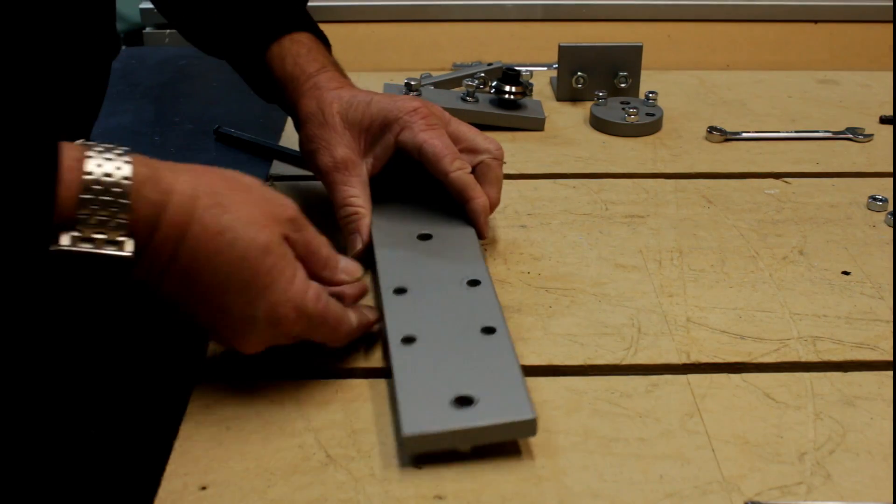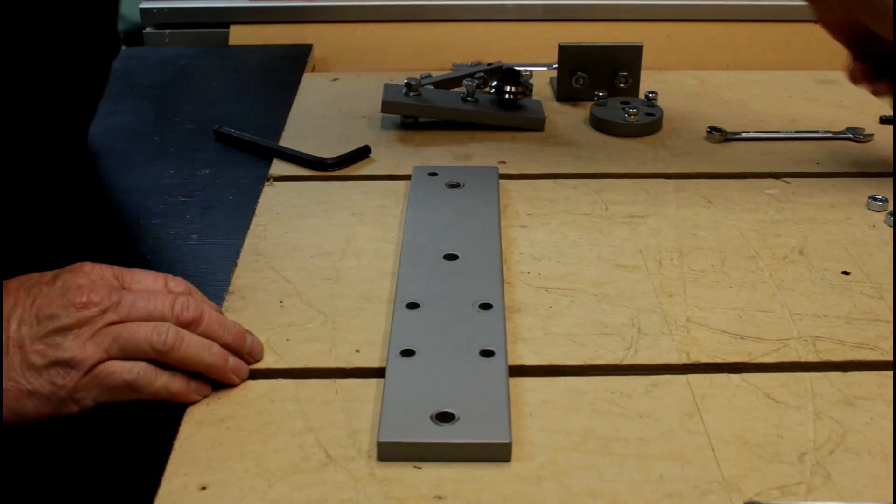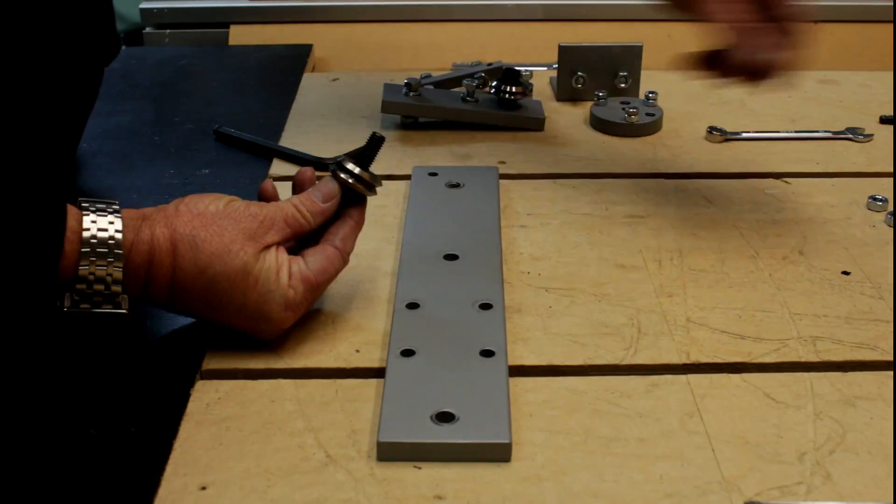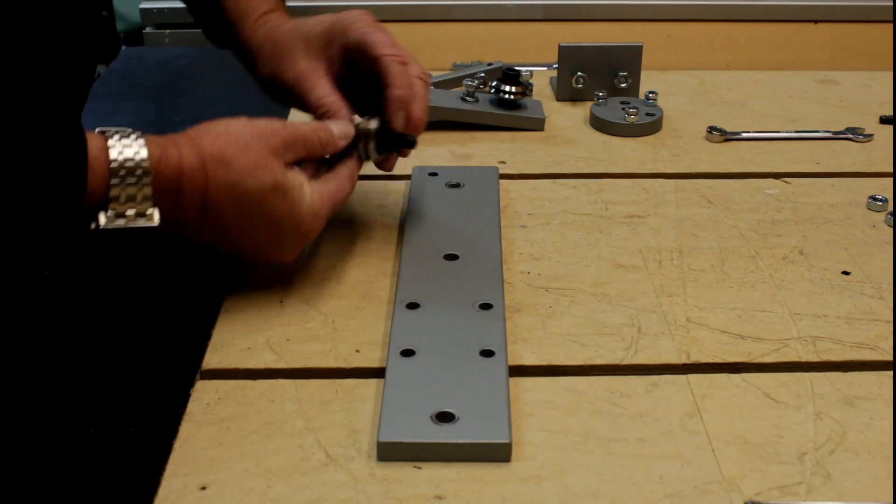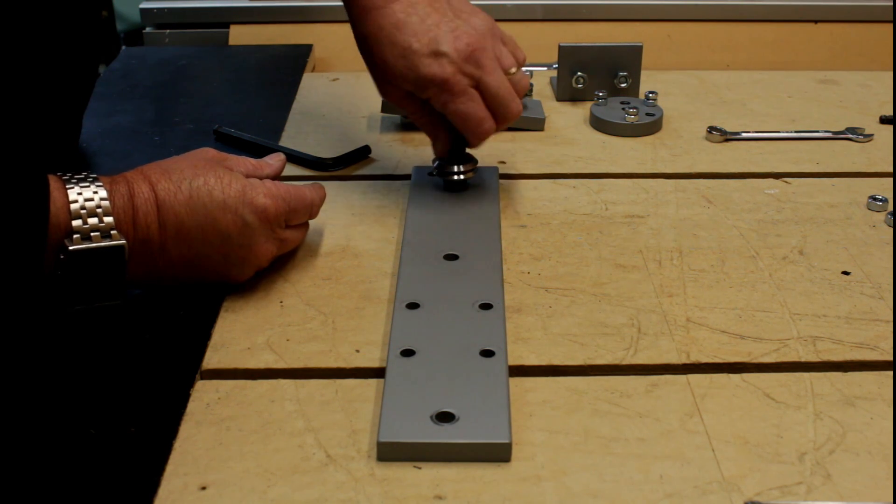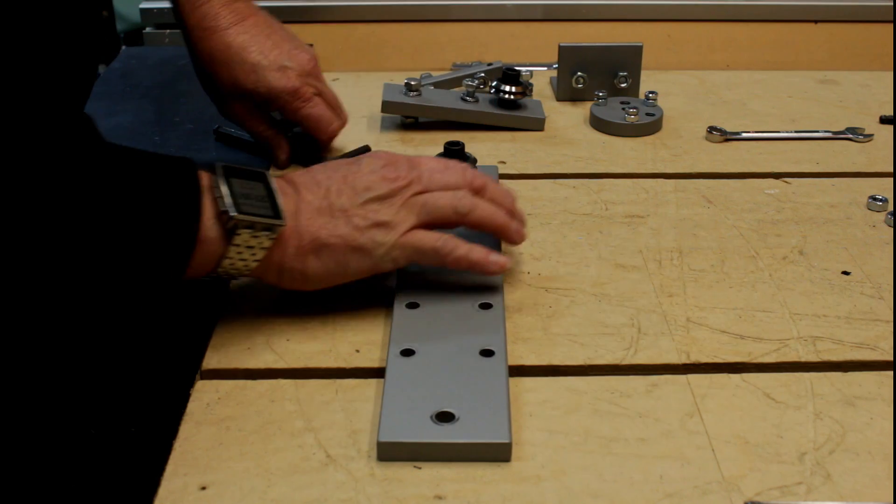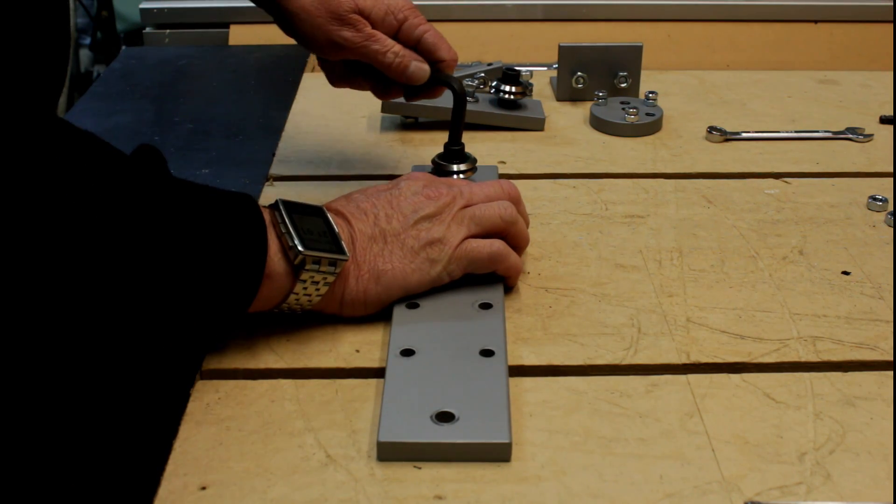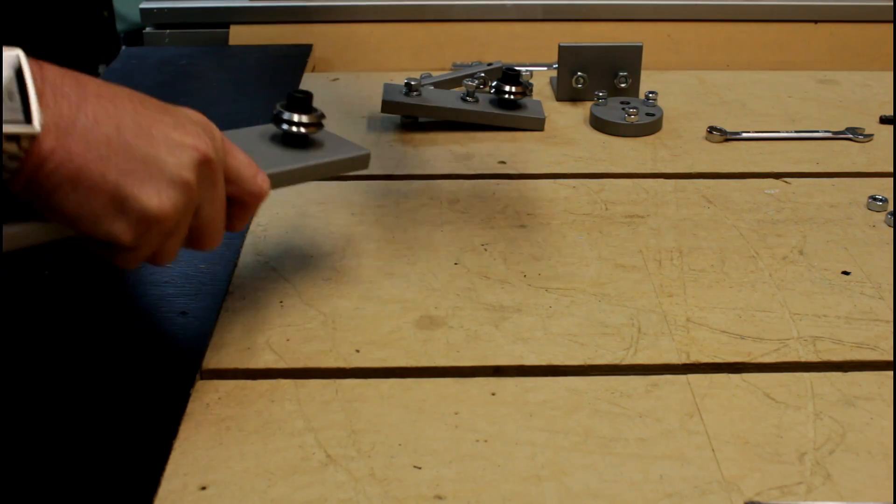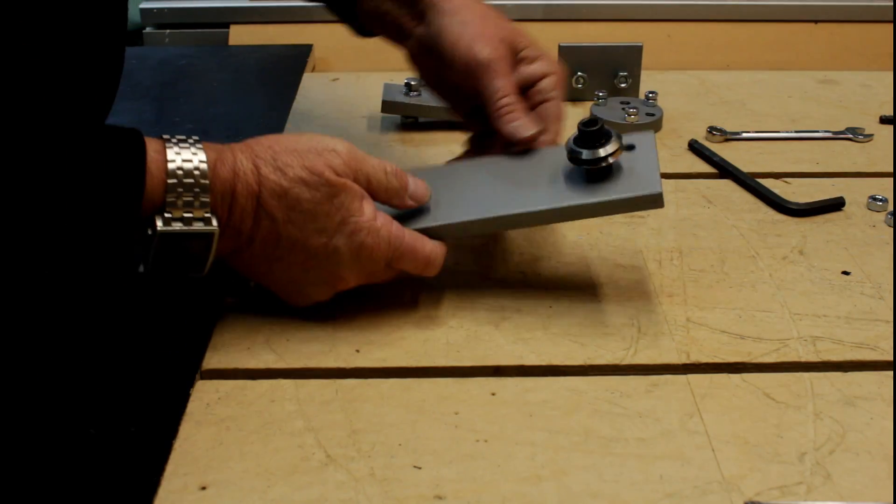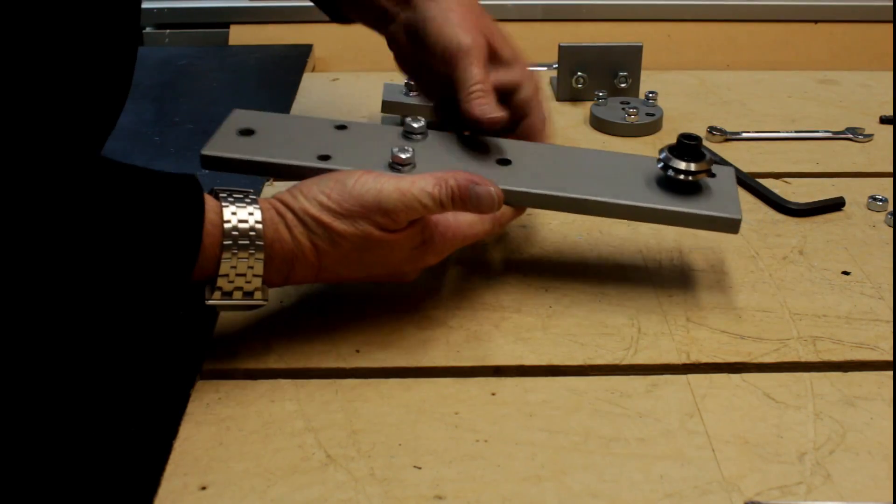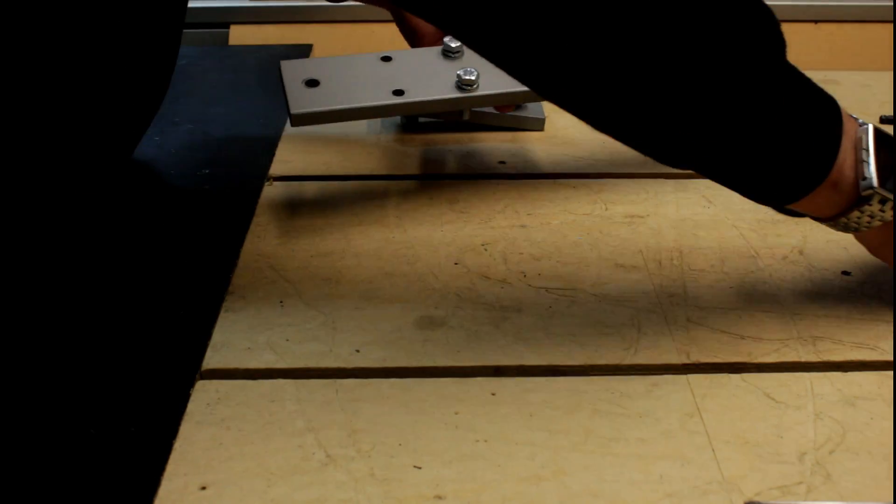The last piece we need to assemble is the top V-bearing rail. This one has two V-bearings on it. The first one attaches the same as it did on the bottom rail, with a 3/8 bolt and a spacer nut. Next, we put on the four mounting bolts that will attach it to the aluminum extrusion.